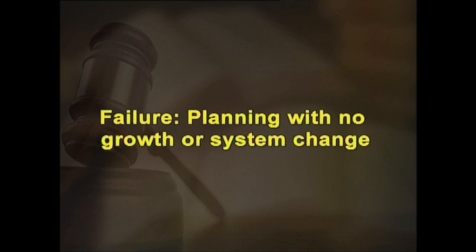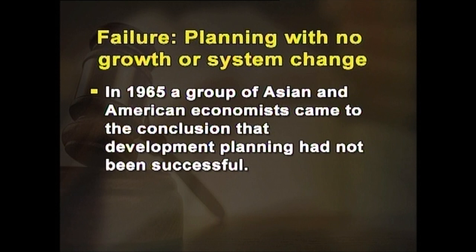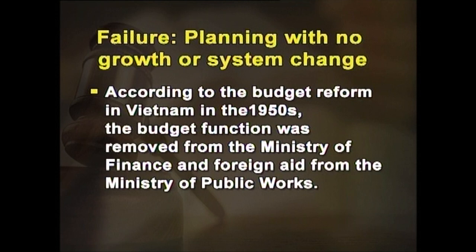Model four: failure — planning with no growth or system change. Wiedner (1970) discusses planning with no growth or system change. In 1965, a group of Asian and American economists concluded that development planning had not been successful. The reasons cited were that economic growth had not been accelerated and apparent growth was barely adequate to cover population increase and inflation. Wiedner gives an illustration of a budget reform in Vietnam in the 1950s, where the budget function was removed from the Ministry of Finance and the Ministry of Public Works, and a central budget agency was established.